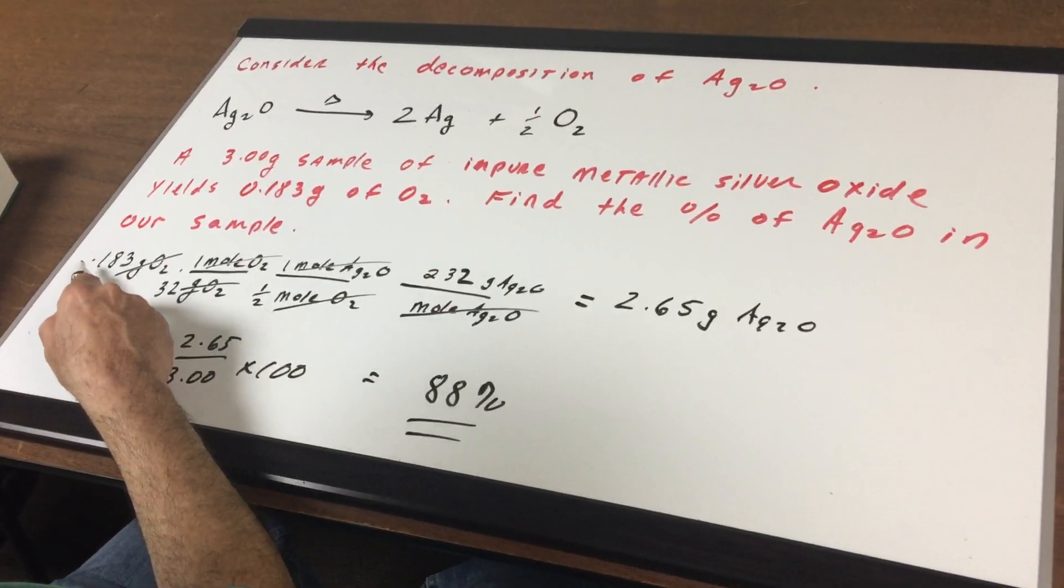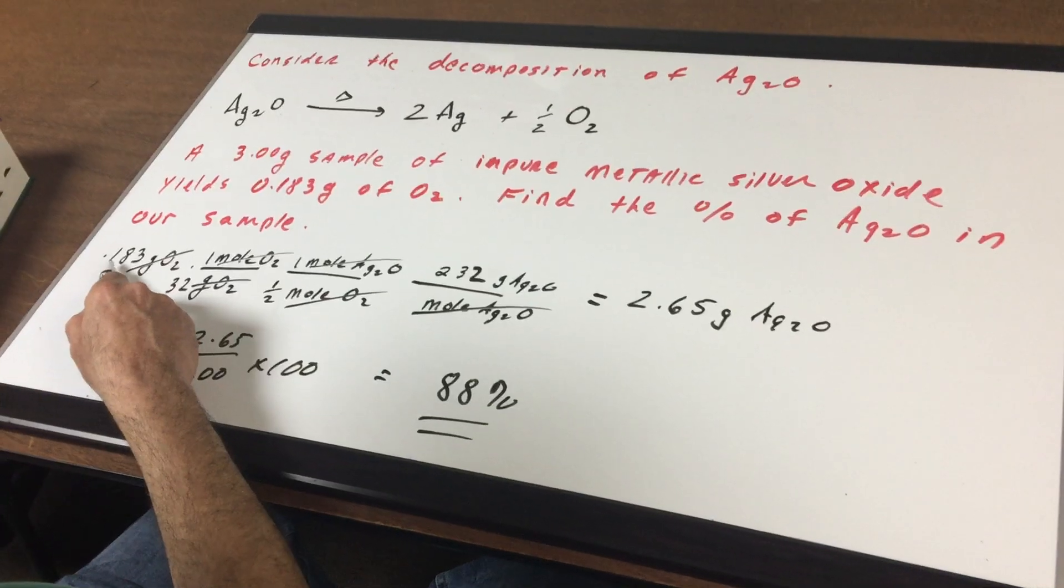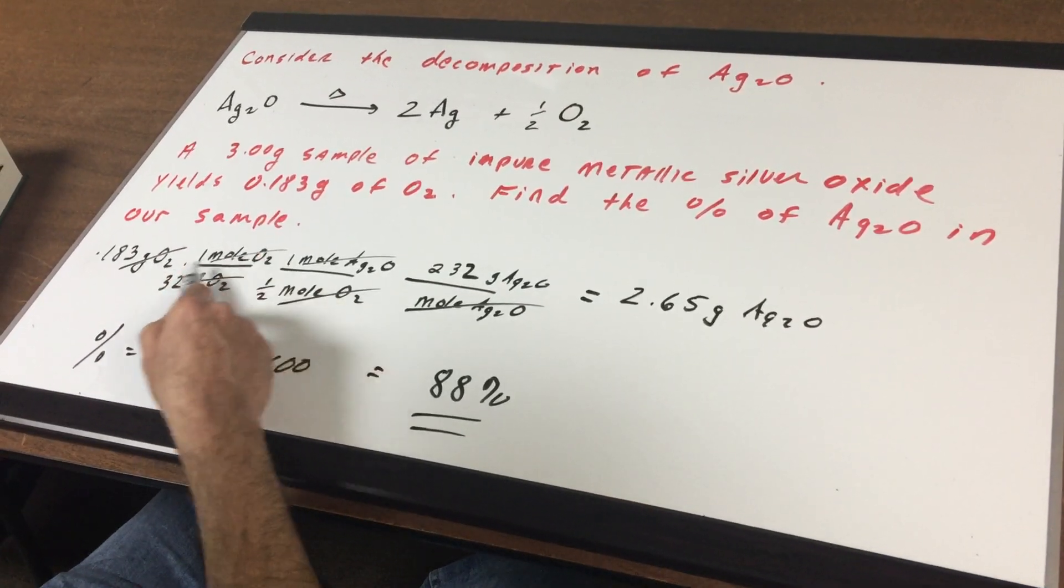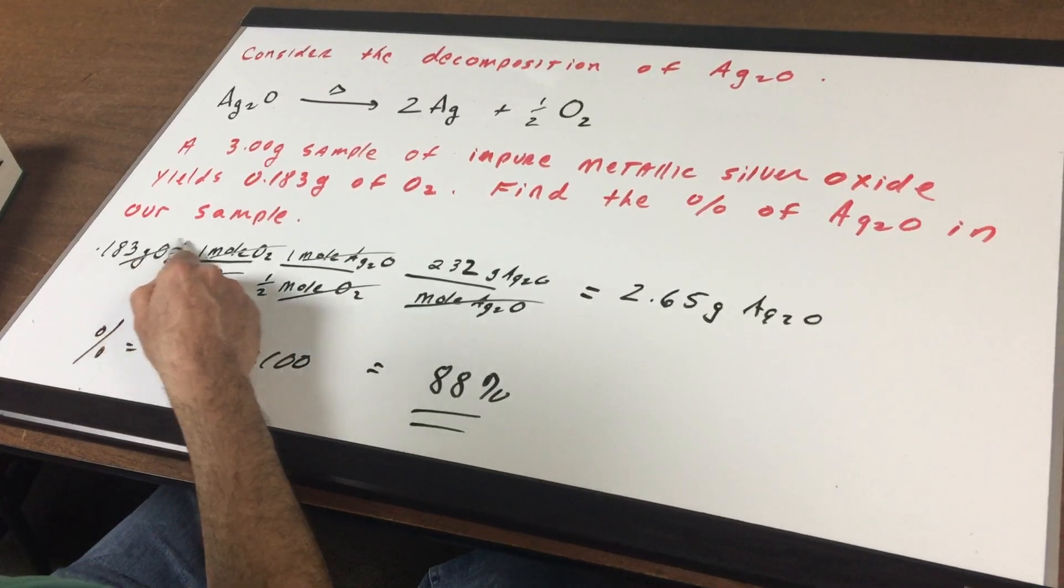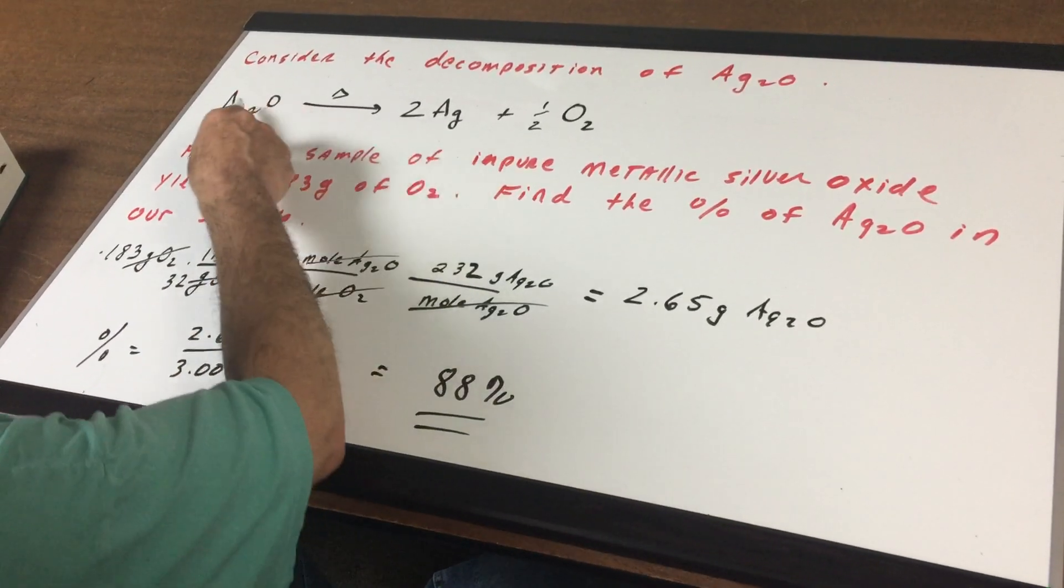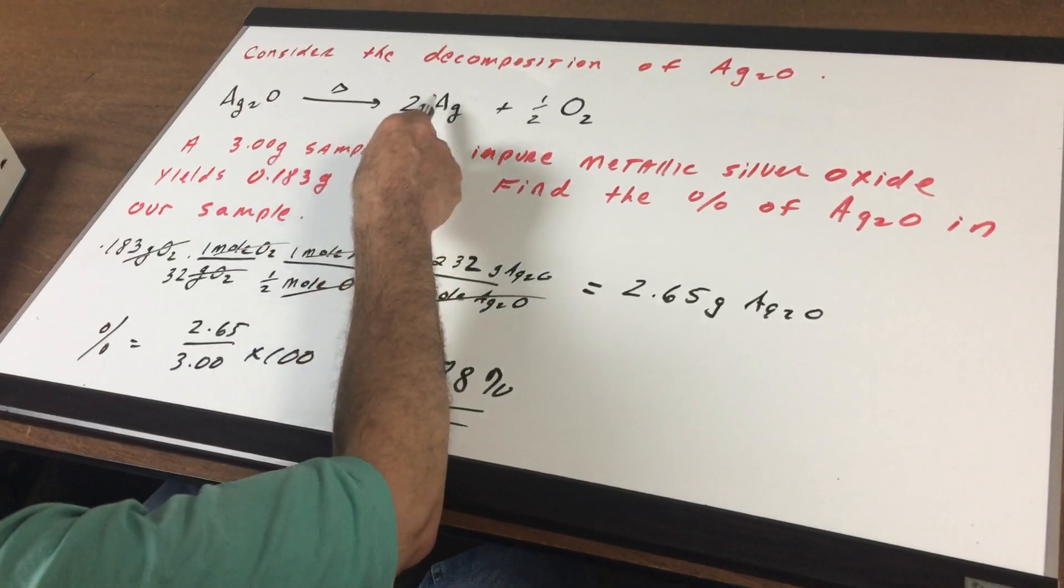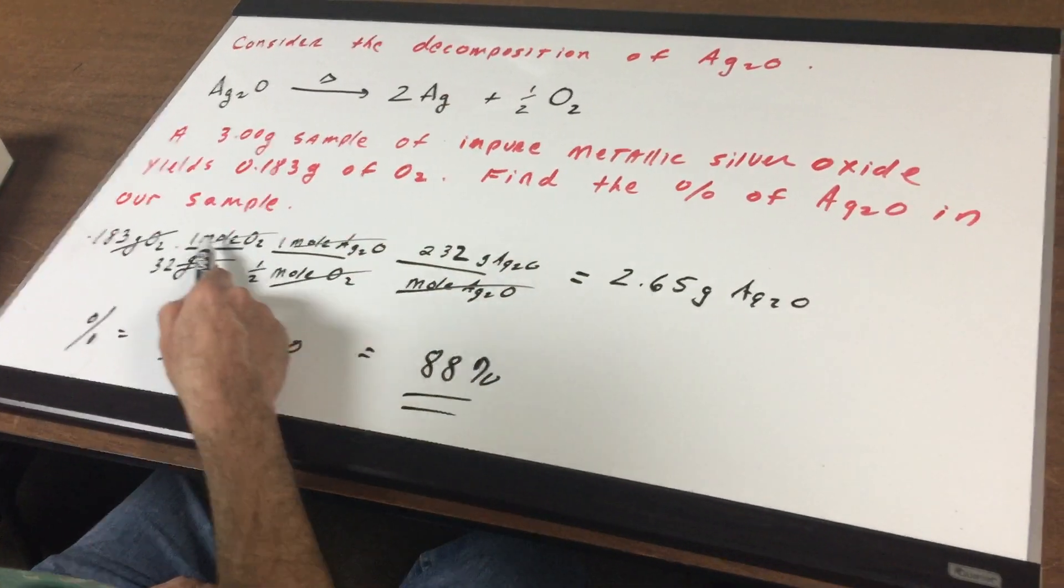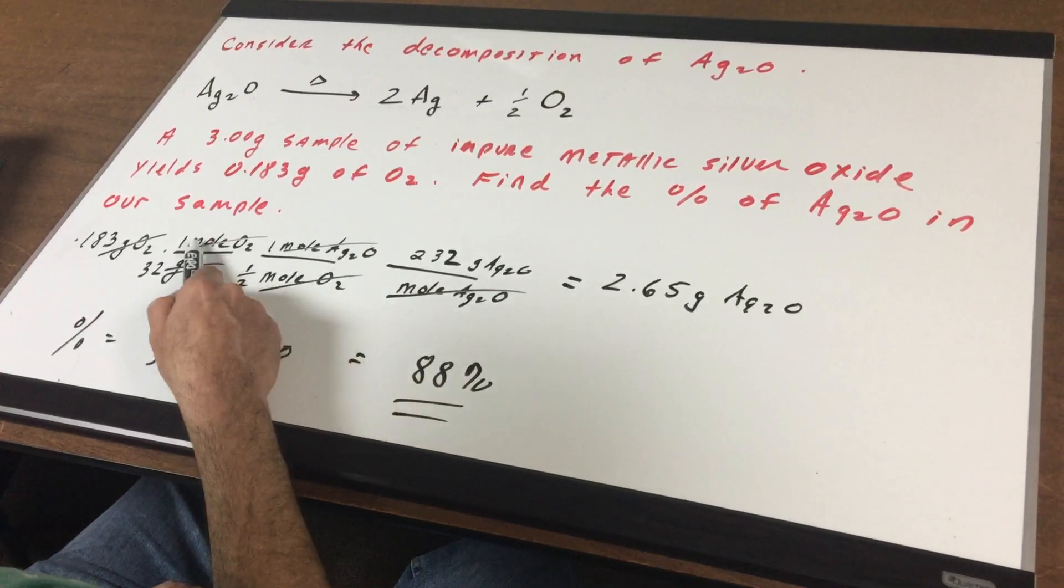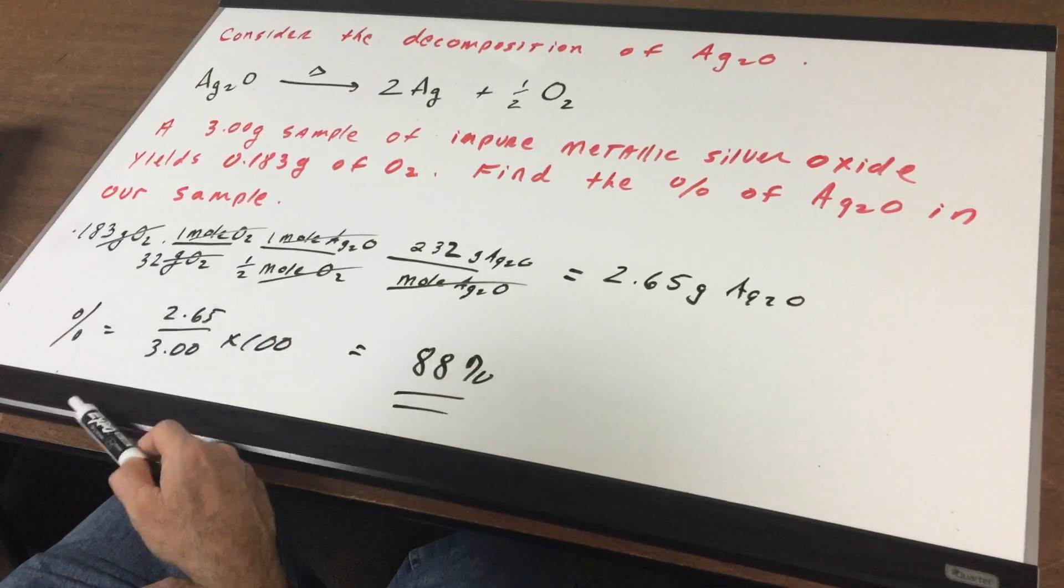Now, what I do is I start off with the given point: 0.183 grams of oxygen. One mole of O2 is 32 grams. That makes the grams of oxygen cancel. Now looking at the stoichiometry, there's one mole of silver oxide for every half a mole of oxygen. So one mole of silver oxide for a half a mole of oxygen crosses out the moles of oxygen.